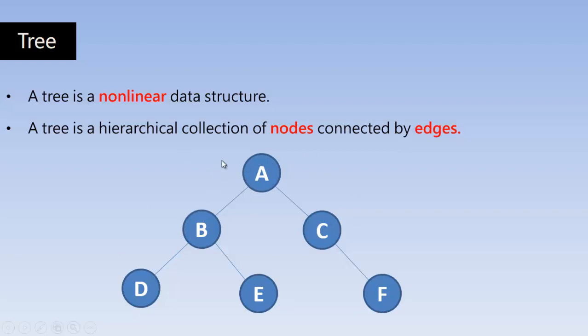This is the tree. It is a set of nodes connected by edges and each node represents the memory location where we can actually store the data. So here A is the data, B, C, D, E, F. You can assume them as data.